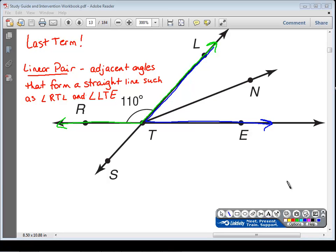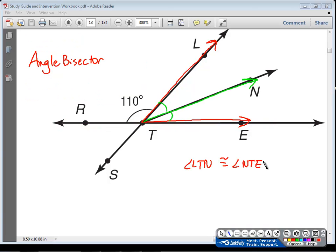One last term that I forgot to put in there is a linear pair. A linear pair are angles that are adjacent to each other and they form a straight line. For instance, the angle I have highlighted in green, RTL, and the angle highlighted in blue, LTE, are lying along a straight line here. So those would be considered a linear pair. Linear has the word line in it, so they lie on a straight line. So make sure that you have all the information in your foldable and your notebook.